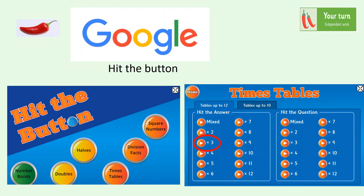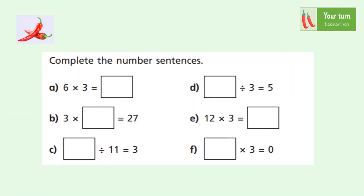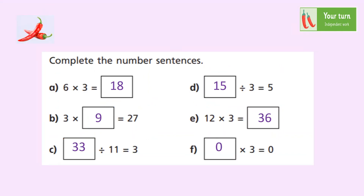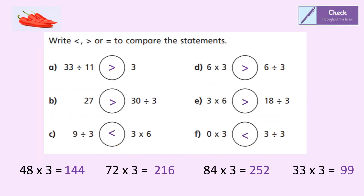If you're choosing the chilli one challenge today, go onto Google, type in, and hit the button. You'll come up with a screen — click on the times table button, then select times three and you can practice your three times table. If you're choosing chilli two today, here are some boxes for you to fill in — remember some are multiplication and some are division facts. If you're choosing chilli three today, here are some statements to compare: work out the equation on either side, then put inside the circle whether it's greater than, less than, or equal to, plus some extra questions along the bottom. Here are the answers for chilli two and chilli three — pause the video now and mark your work.